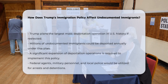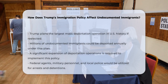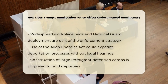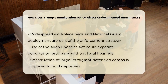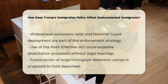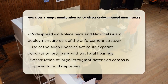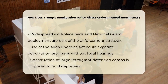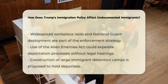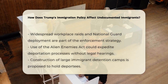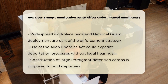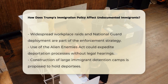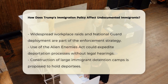These mass deportations would involve widespread workplace raids and the deployment of the National Guard for immigration enforcement. Trump's advisers have suggested using the Alien Enemies Act, an obscure law from 1789, to override legal procedures for determining whether an individual can be removed from the country. This could lead to expedited removal processes, which allow for rapid deportations without the usual legal hearings.